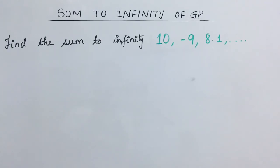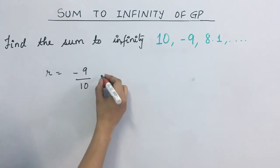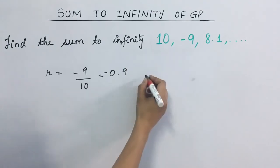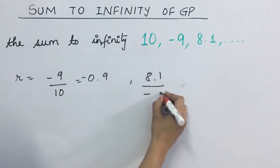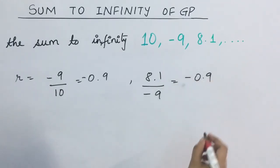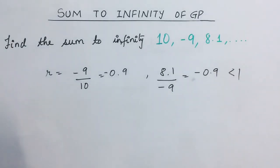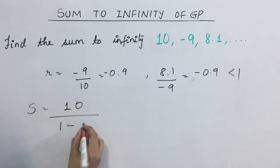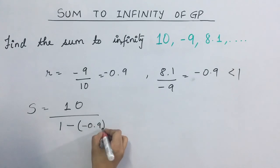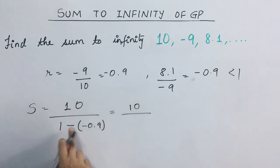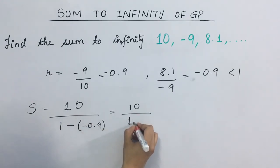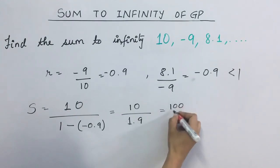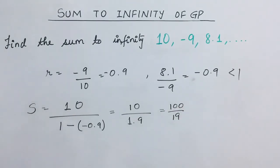Agla question dekhte hain: find the sum to infinity of the series 10, minus 9, 8.1, and likewise. Yahan par r ki value kitni hai? Minus 9 by 10, that is minus 0.9. Isse dekh sakte hain, and 8.1 upon minus 9 yeh bhi kya aajayega: minus 0.9. So r ki value kya hai? It is less than 1. So S will be equal to a upon 1 minus r, that is 10 upon 1 minus (minus 0.9), yeh ho jaega 10 upon 1.9, and this is equal to 100 upon 19. This will be the sum to infinity of the given series.